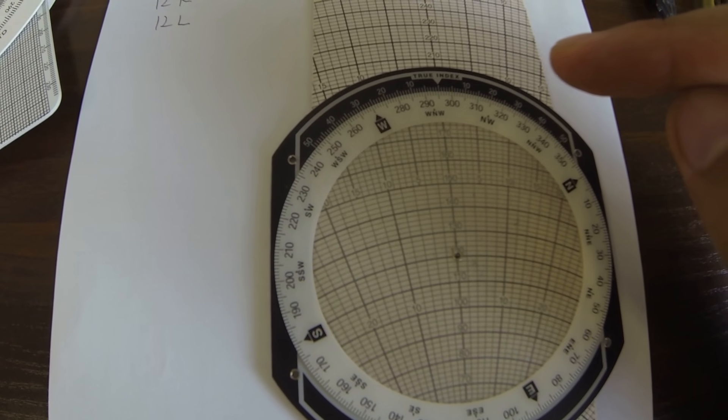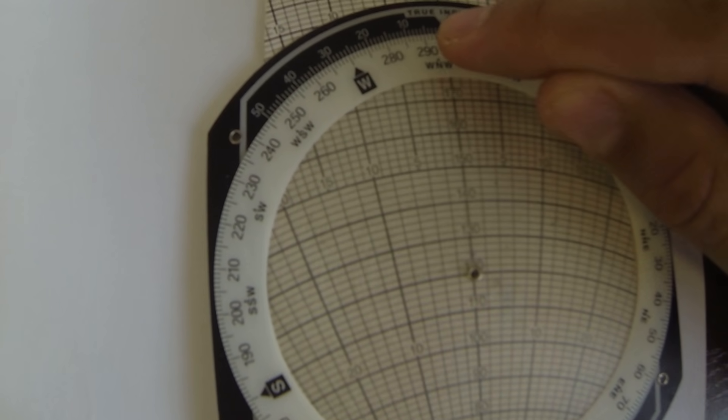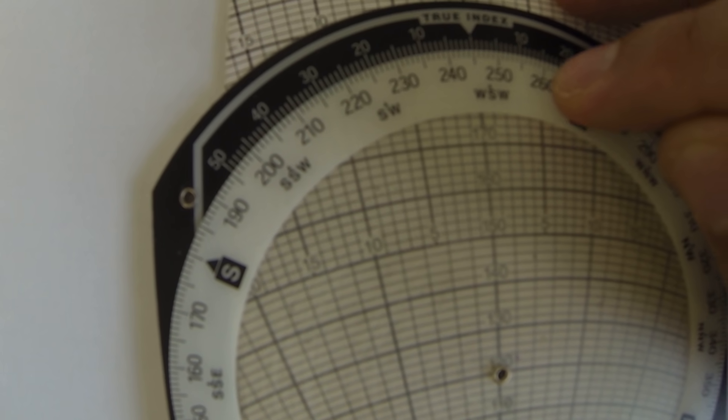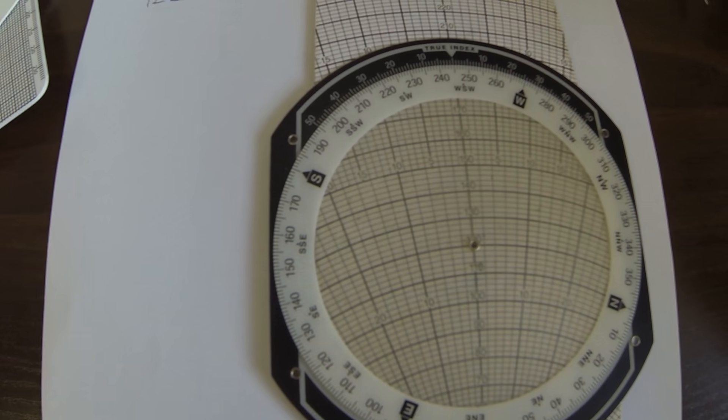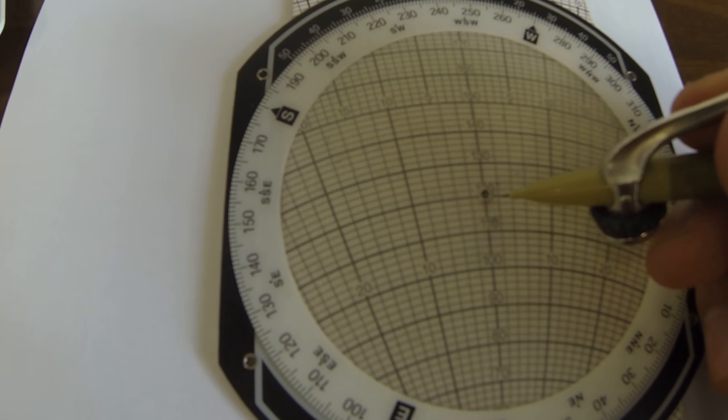Here we don't have the wind arm, so we have to put the wind first. So wind is at 245, so first you put the wind and then you mark the 12 knots. This is every line is 2 knots.